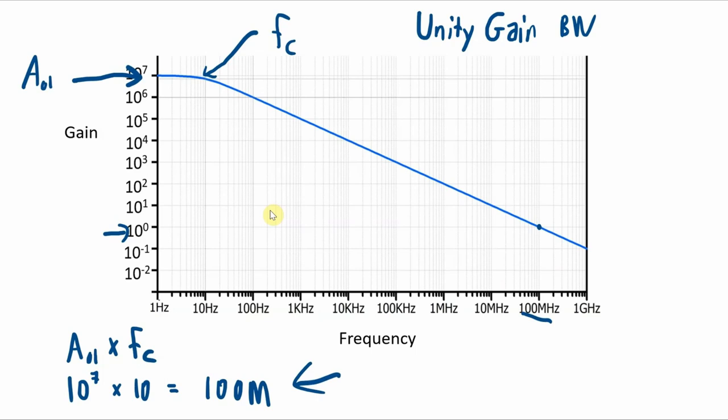That's the same value as the gain bandwidth product. And this totally makes sense. This is the gain of one times the bandwidth at that point. And it gets even more interesting. Pick any point on this graph and get the open loop gain and the frequency at that point. Multiply those two values together and you will always end up with that 100 megahertz.